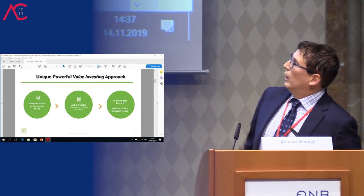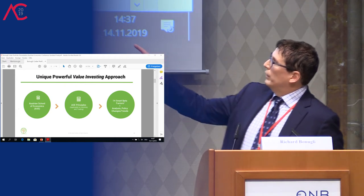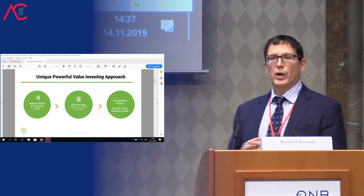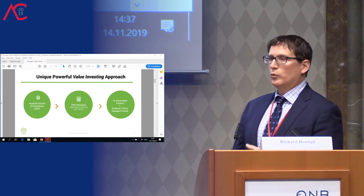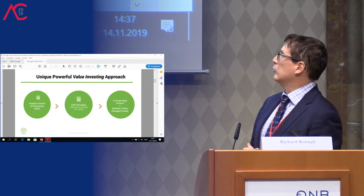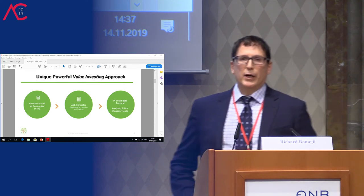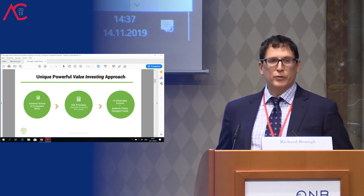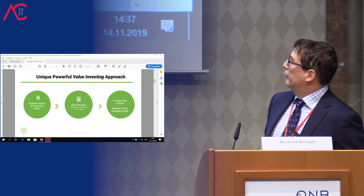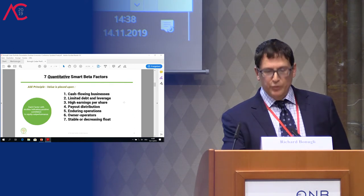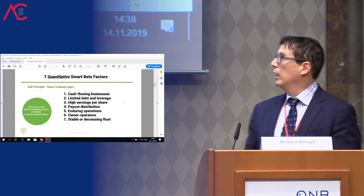This is a depiction of our funneling process. We look at the Austrian School and have synthesized its principles and themes as the basis of investing and trading — how we can apply those principles toward investing and trading. We came up with 14 smart beta factors that we believe affect the performance of actual investments, either multi-asset or equity only. These are divided into two sets: seven quantitative smart beta factors and seven qualitative smart beta factors.